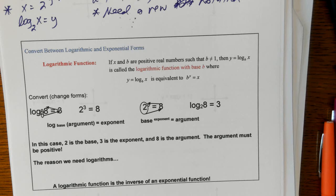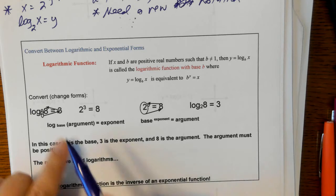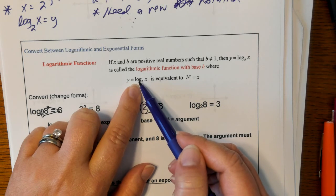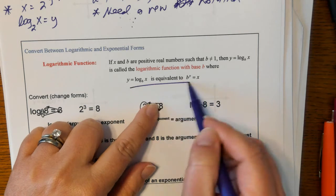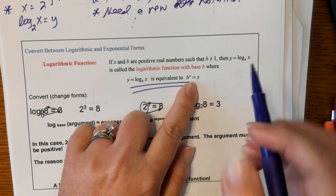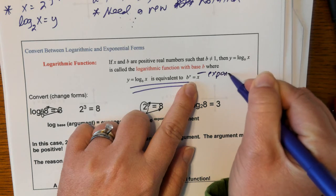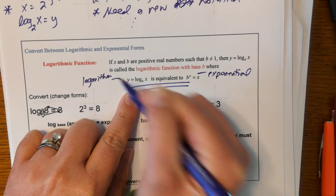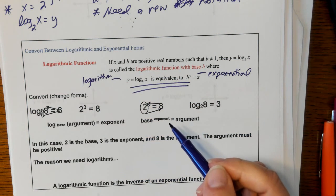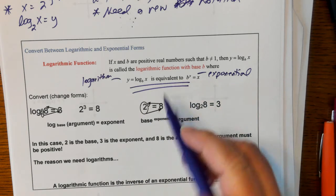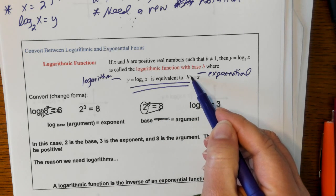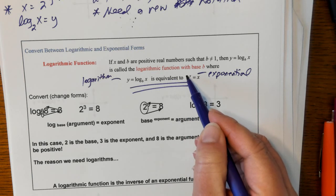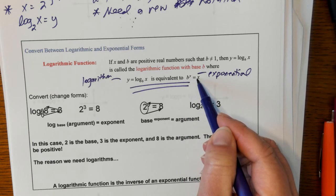A logarithmic function is one where we have a log in it — Y equals log base B of X. Notice it is equivalent to B to the Y equals X. This one is an exponential, and this one is a logarithm — they mean the same thing. But logs allow you to get exponents by themselves. So here our y was in the exponent position; we can't graph stuff when y is in the exponent position. So we convert it to log base B of x equals y.